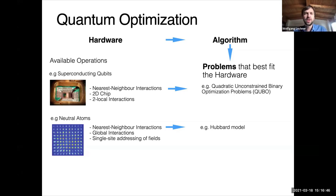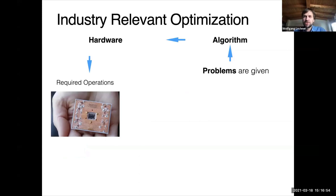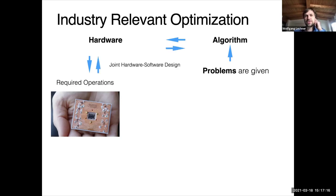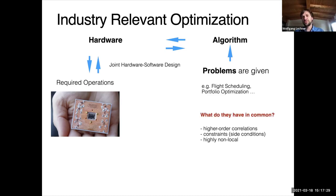In physics, people look at models like the so-called Hubbard model, which describes physical properties of metals. Now, with the industrial revolution more or less underway in the quantum community, this is starting to turn around. People are now thinking in the other direction as well — saying, given a problem, what is actually the best algorithm and what are my hardware requirements to solve it? I think this is a very exciting time because this can now go back and forth, with joint development of hardware and software.